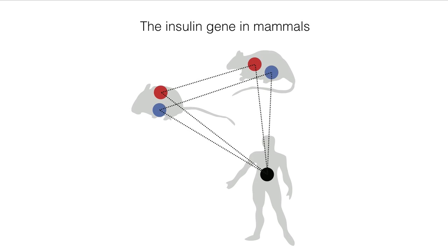Let's start by looking at the insulin gene in human and rodents. In human there is one copy, but in the two rodents there are two copies. What's going on here?